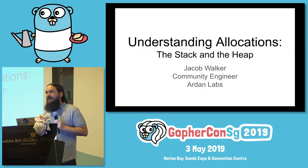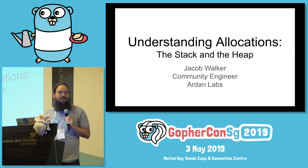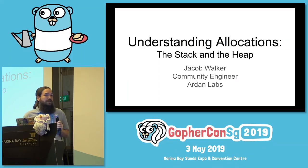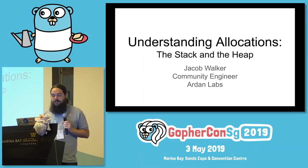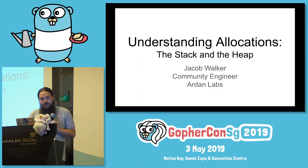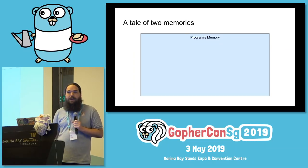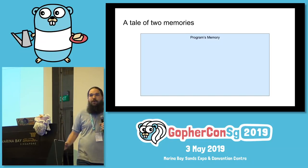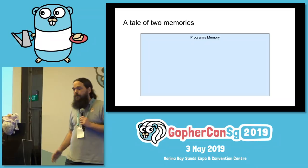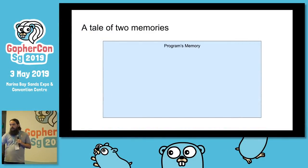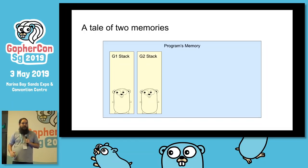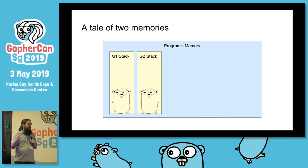Thank you everyone for coming. My name is Jacob Walker, I'm a community engineer with Ardan Labs. This talk is 'Understanding Allocations' — we're going to be talking about the stack and the heap. Depending on your background, if you're a C programmer you're probably already pretty familiar. In your program there are two kinds of memory: you've got stack memory, and in Go we have multiple stacks — there's a stack for each goroutine.